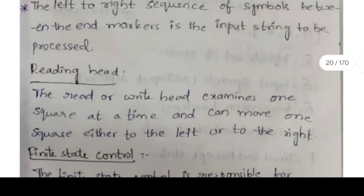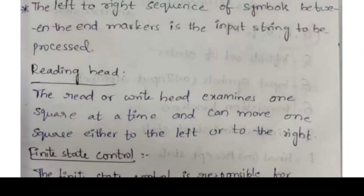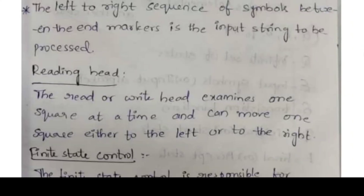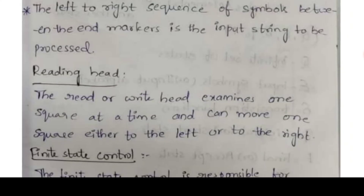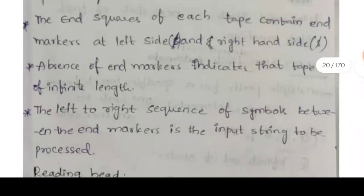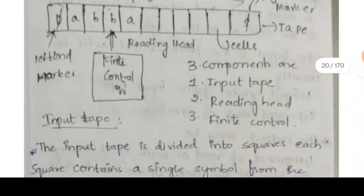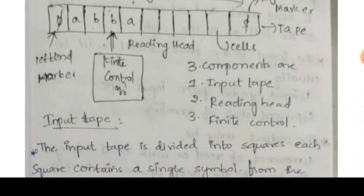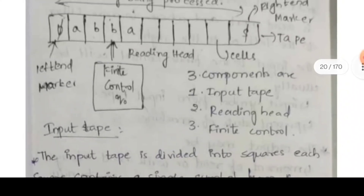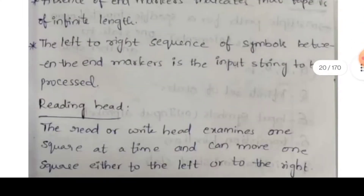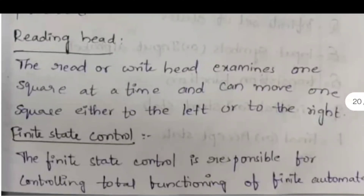The read or write head examines one square at a time and can move one square either to the left or to the right. The reading head can move one step to the right or one step to the left, examining each cell.